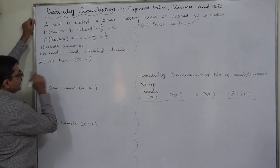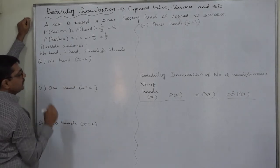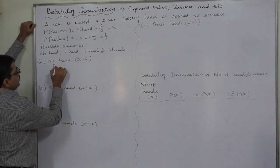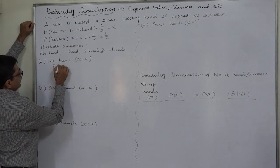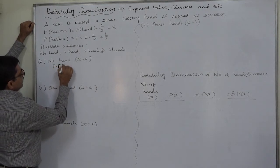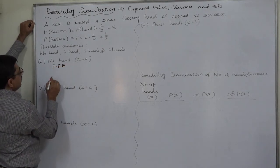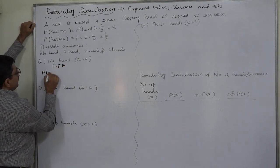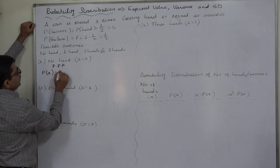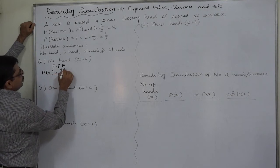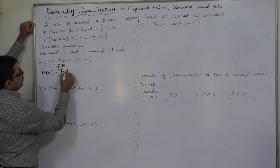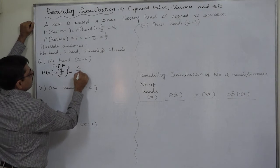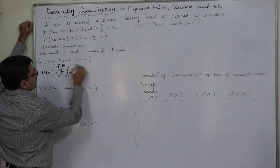No head is possible in only one way: failure in the first trial, failure in the second, and failure in the third. So the probability will be one by two times one by two times one by two, that is one by eight.